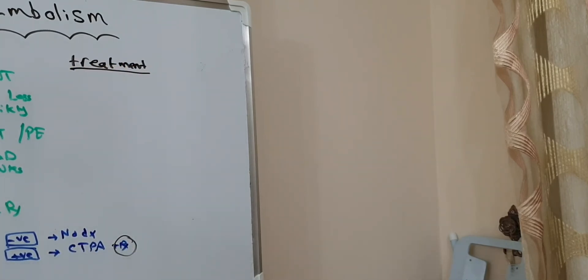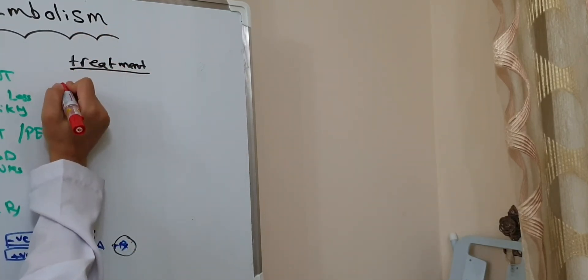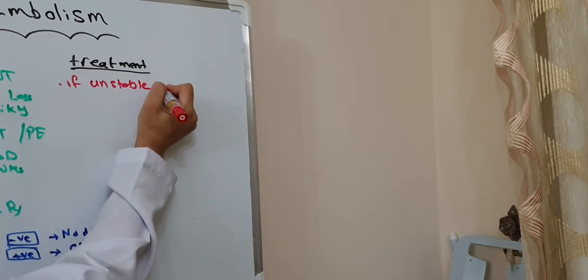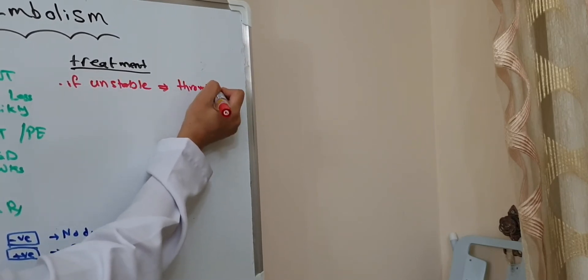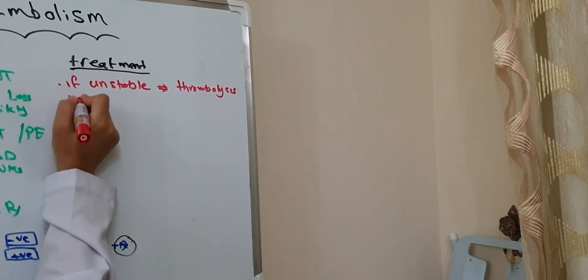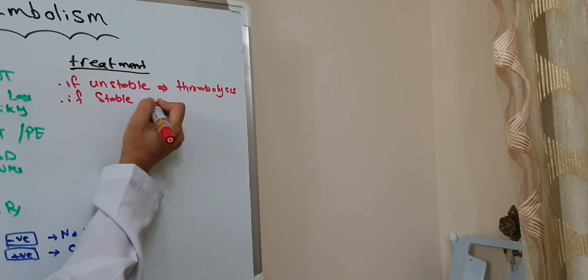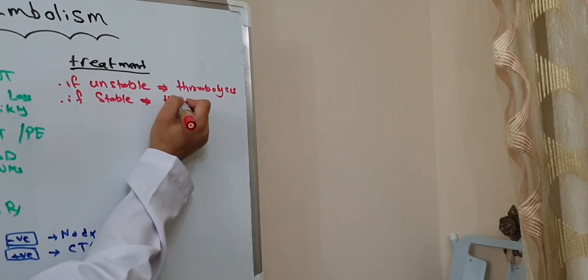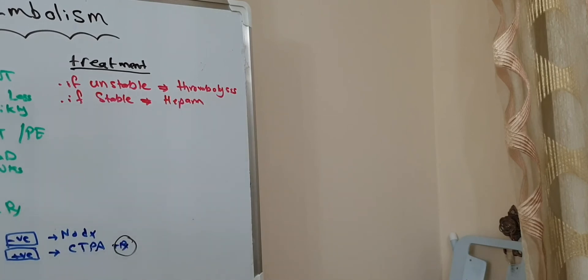Treatment of pulmonary embolism is divided according to hemodynamic stability. If the patient is hemodynamically unstable, such as with hypotension, we give thrombolysis. Thrombolysis for PE is different from thrombolysis for MI - we should give 10 ml then 90 ml.